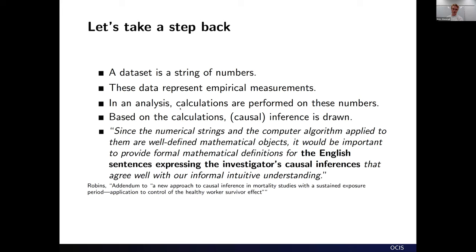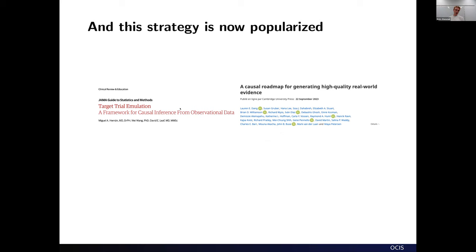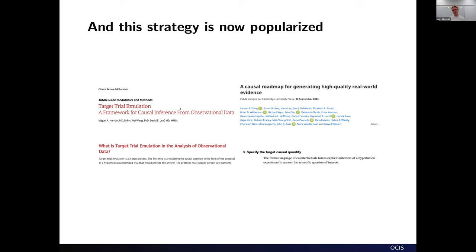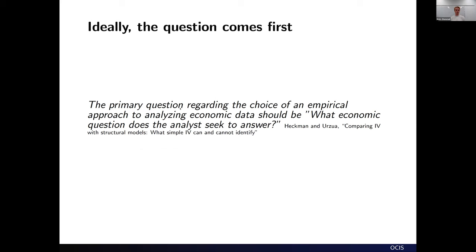Robbins wrote this in 1987 after his seminal 1986 paper, which was firmly grounded in concrete questions about causal effects of interventions or exposures in occupational health settings. The key point is that it starts with a question. This idea — starting with the question — has been popularized along the lines that Robbins and others suggested decades ago, in frameworks like the target trial framework and causal roadmaps, both of which place articulating the causal question as the first step. Heckman in economics similarly wrote that the primary question regarding the choice of an empirical approach should be: what economic question does the analyst seek to answer?